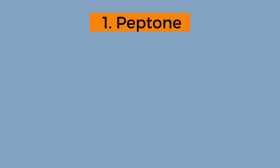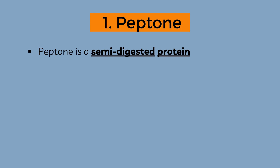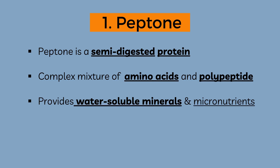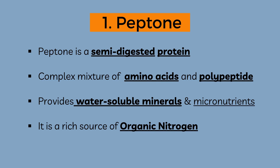The first ingredient present in nutrient agar is peptone. Peptone is a semi-digested protein — it is a product of protein hydrolysis. This peptone is prepared from enzymatic digest of animal proteins. Peptone is a complex mixture of amino acids and polypeptides. It contains a high concentration of water-soluble minerals and micronutrients, and most importantly, it is a rich source of organic nitrogen. So peptone is a very essential component for proper bacterial growth, fulfilling the protein demands of bacteria.